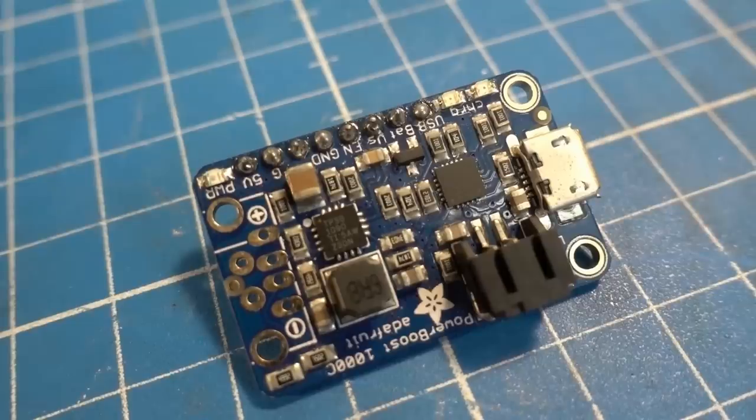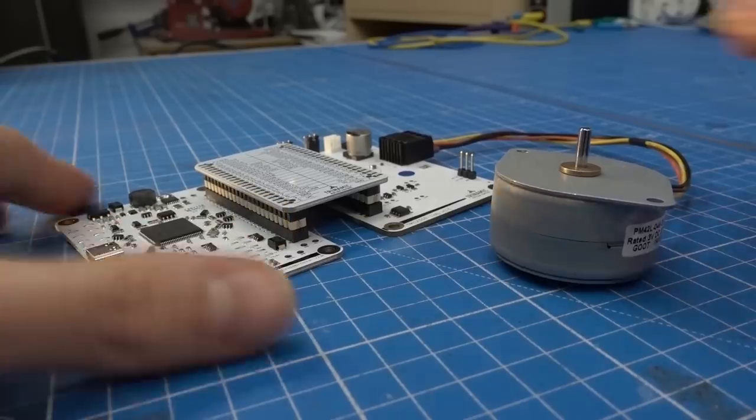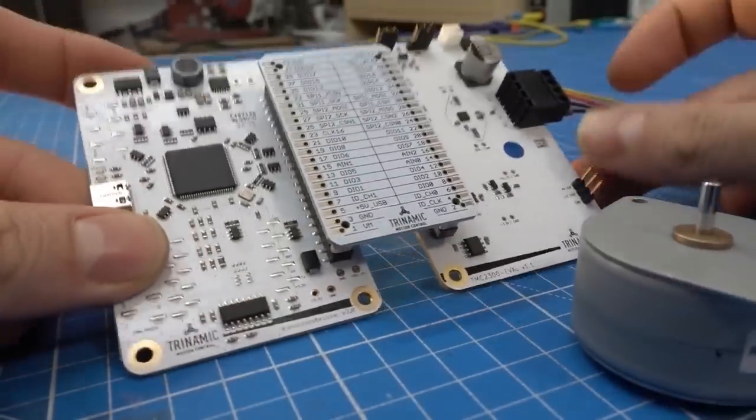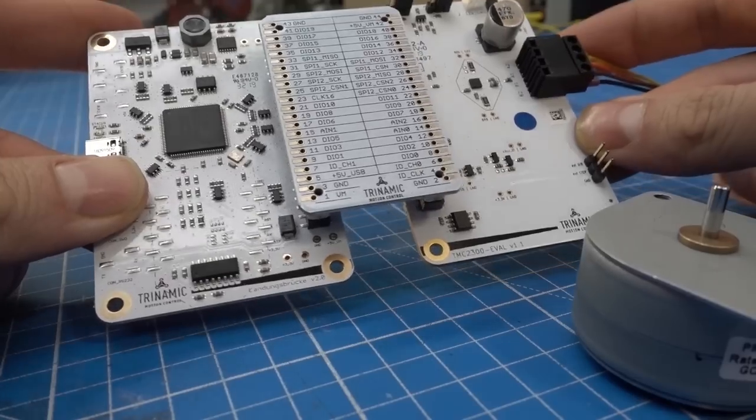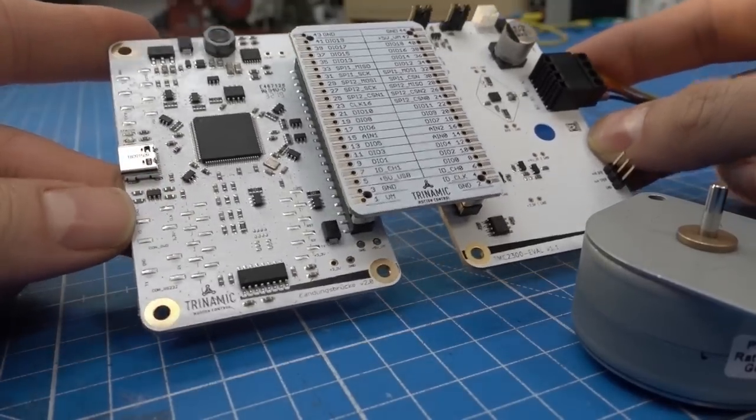And then we also need a way to power it. And I want this unit to be self-contained. So I need a battery and a charging/battery control circuit. I'm currently doing a road test review on the Trinamic TMC 2300 stepper driver. And that is a specialized module for battery powered applications. So I thought, hey, that could work for this project.